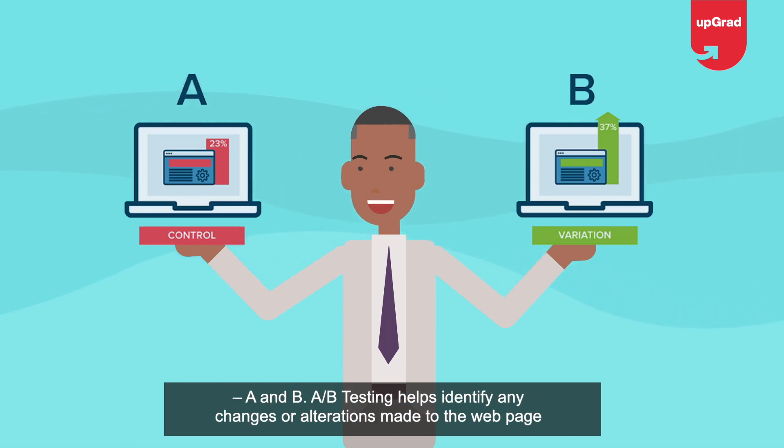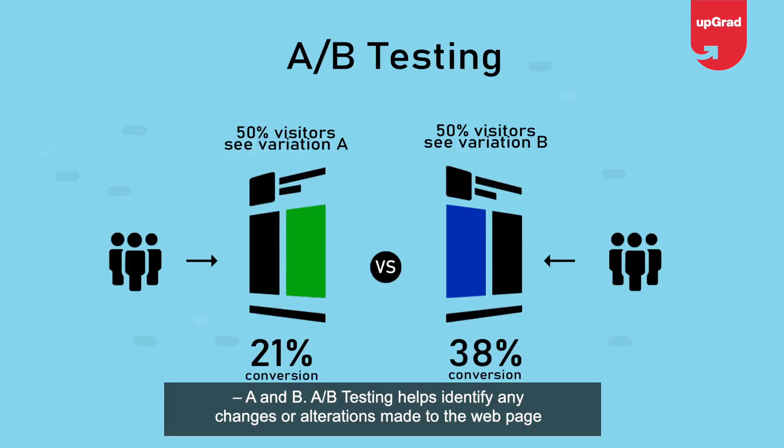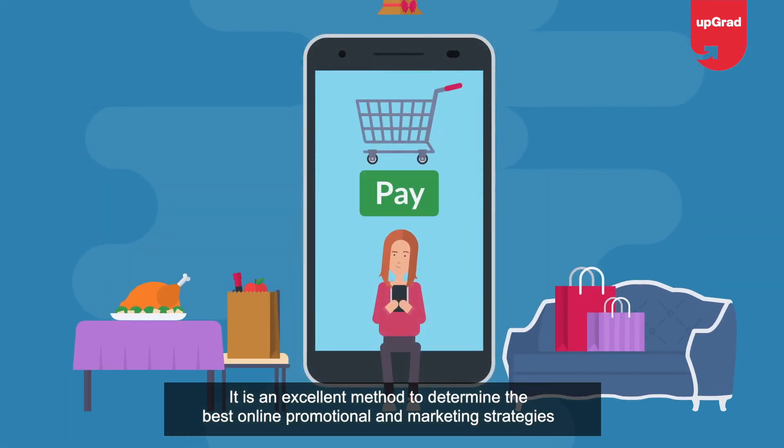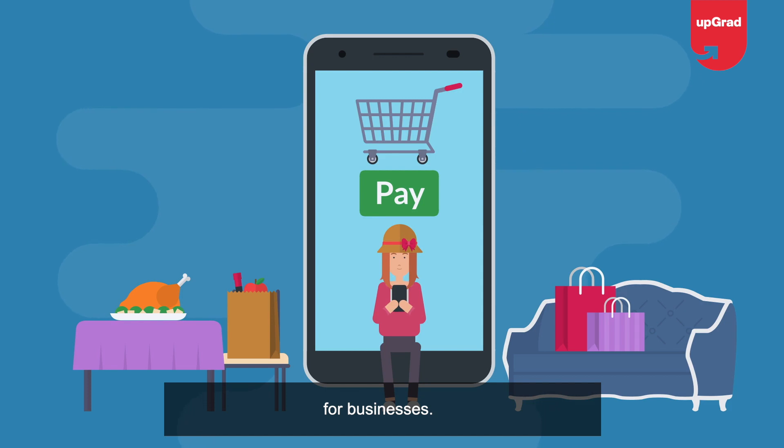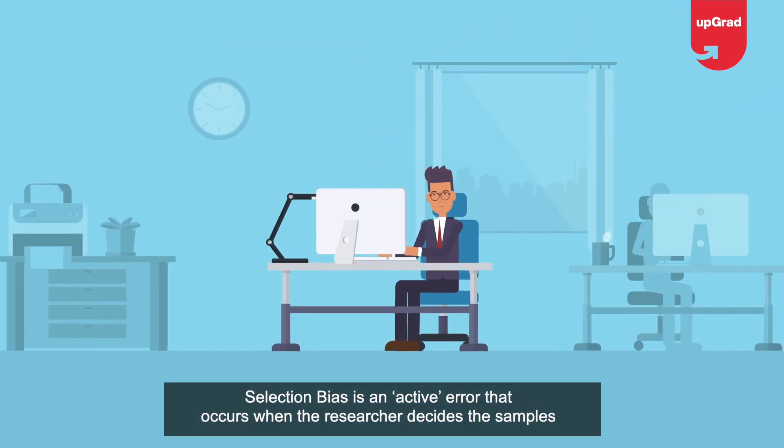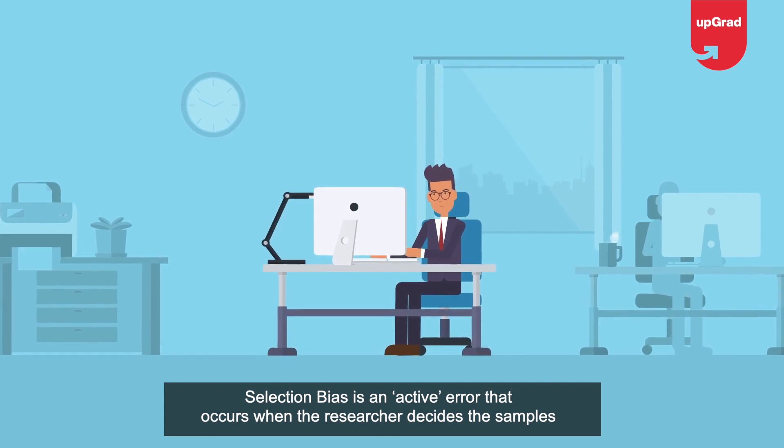Question 6: What's the importance of A/B testing? A/B testing is a statistical hypothesis testing for random experimentation involving two variables, A and B. It helps identify any changes or alterations made to a web page to maximize the outcome of interest. It is an excellent method to determine the best online promotional and marketing strategies for businesses.